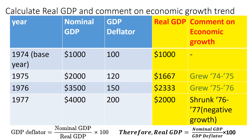And similarly, for 1977, real GDP equals 4000 divided by 200, times 100 — that gives us 2000 dollars.